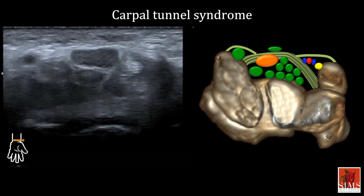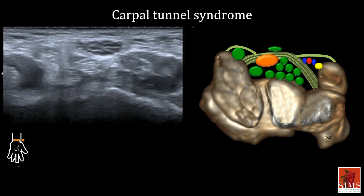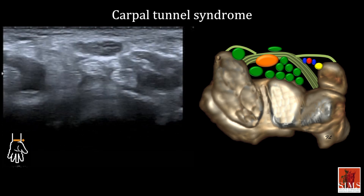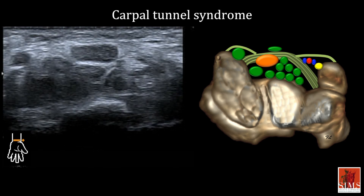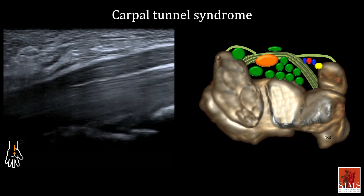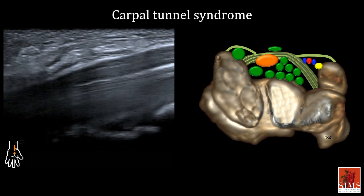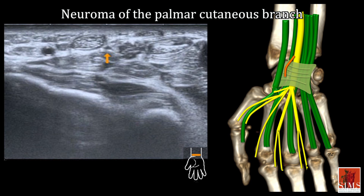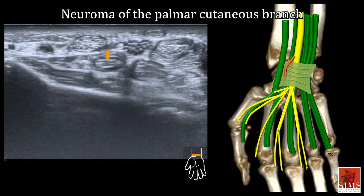Here is an axial view showing an example of a median nerve disorder. It appears hypoechoic with loss of its fibrillar pattern as it passes under the flexor retinaculum. This sagittal view clearly shows a stricture over the flexor retinaculum; above it, the nerve appears hypoechoic and thickened with loss of its fibrillar pattern. On this axial view, we follow the palmar cutaneous branch of the median nerve and find a small neuroma with a hypoechoic appearance.